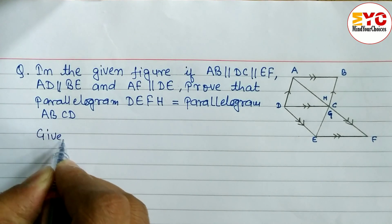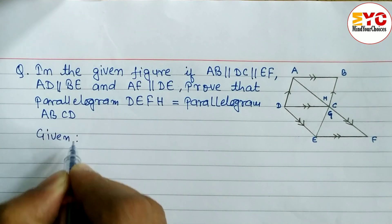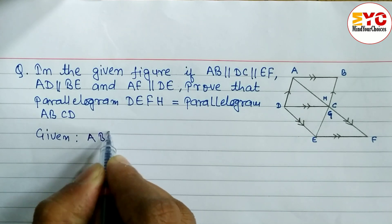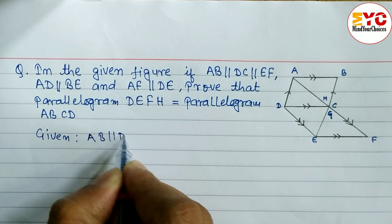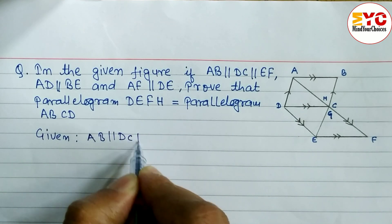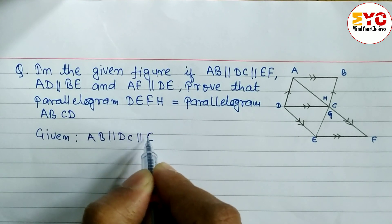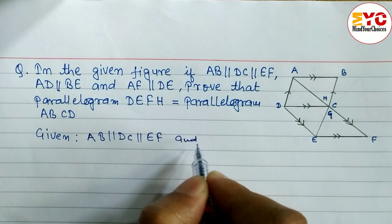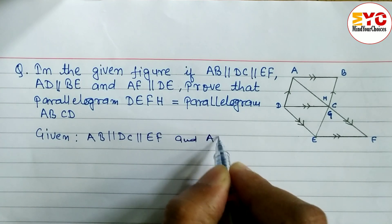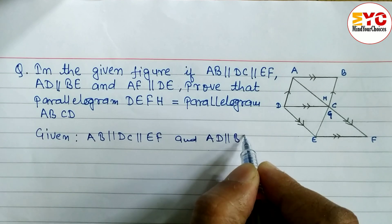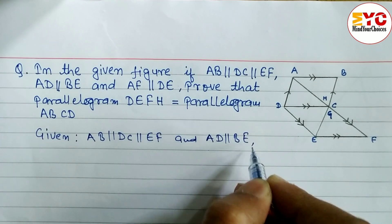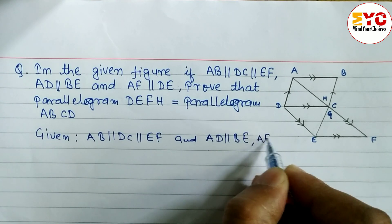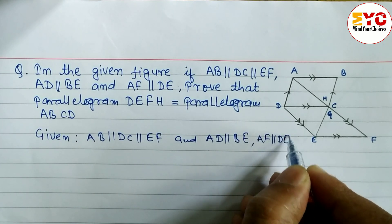First of all, we write down what is given. Given: AB parallel DC parallel EF, and AD parallel BE. Also given: AF parallel DE.